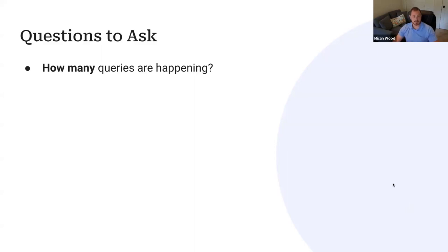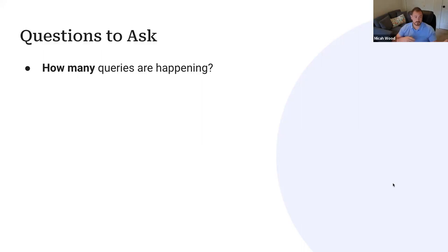As you look at what's triggering the most queries, you might find that a particular plugin is a bad actor making hundreds of queries, none of which can be cached with object caching. Then you have to question: am I going to continue using this plugin? Is there an alternative? A lot of times the fix is just moving away from a tool you've been using because you didn't realize it wasn't performant.